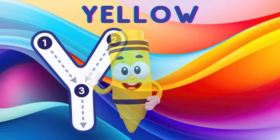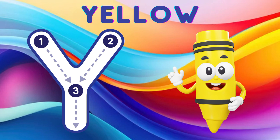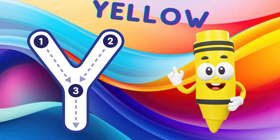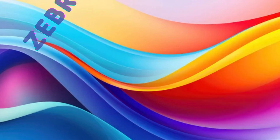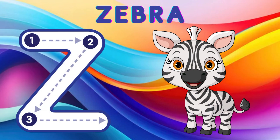Y is for yellow, y-y-yellow. Z is for zebra, z-z-zebra.